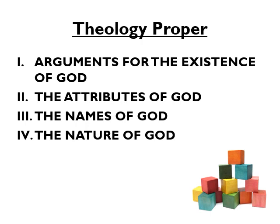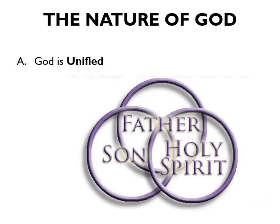Now that we have discussed the names of God, let's move on to the nature of God. The first thing I'd like to point out about the nature of God is that God is unified. The divine nature of God is undivided and indivisible. There is but one infinite and perfect Spirit. God is not merely one — He is the only one. There cannot be more than one all-inclusive, more than one ultimate, more than one God. So let's look at a few aspects of God being unified.